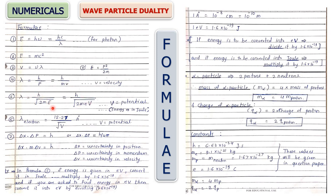If specifically lambda of electron is asked, we have already done the calculation substituting h, mass of electron, and charge of electron, and obtained the direct formula: λ_electron = 12.27 / √V (in Angstroms). You can remember and use this directly. For proton, if you don't remember the direct value, use the general formula with mass of proton; charge is the same as the electron.